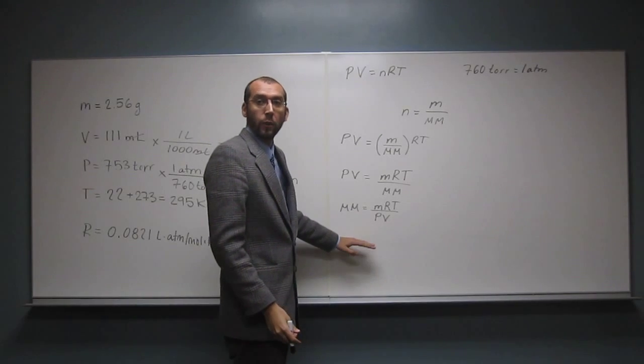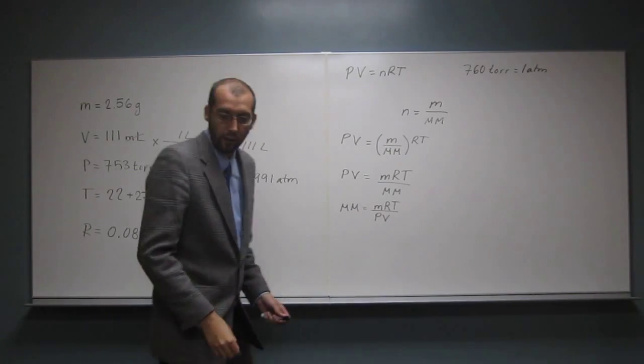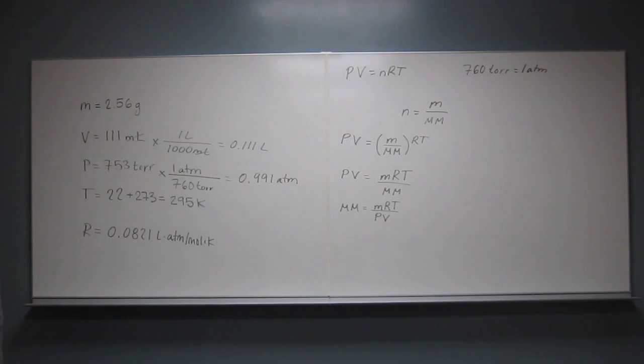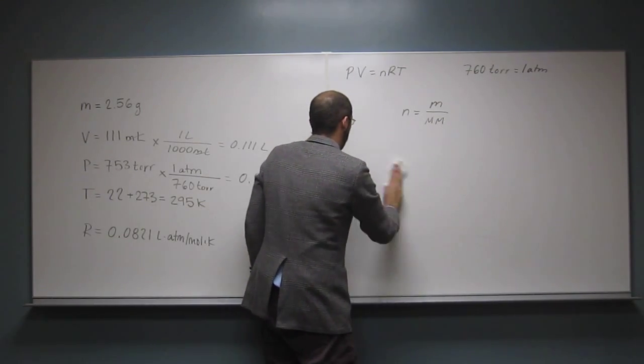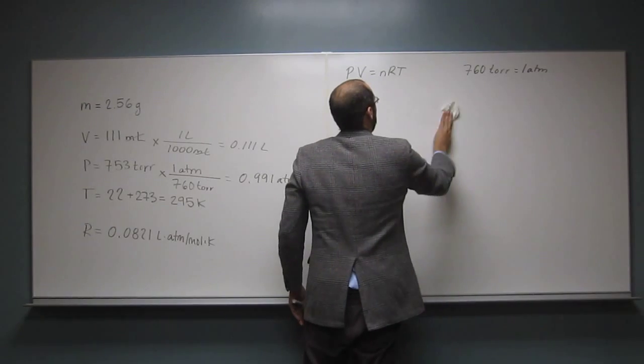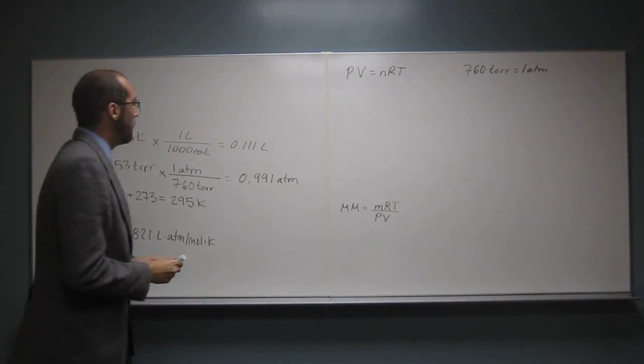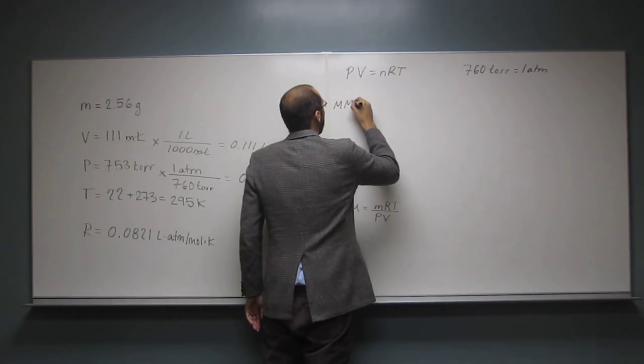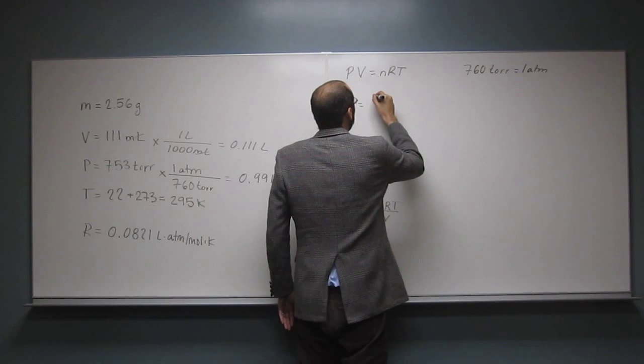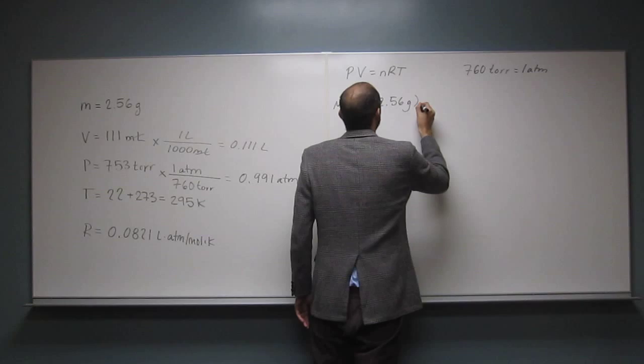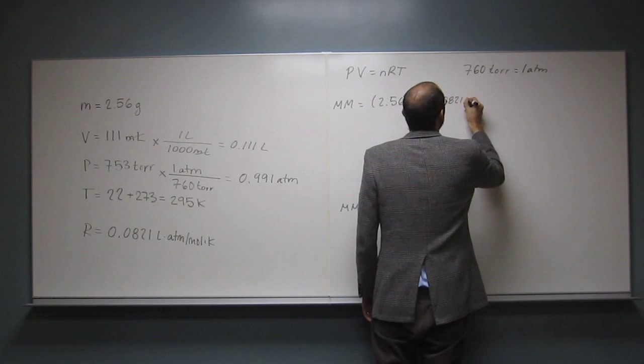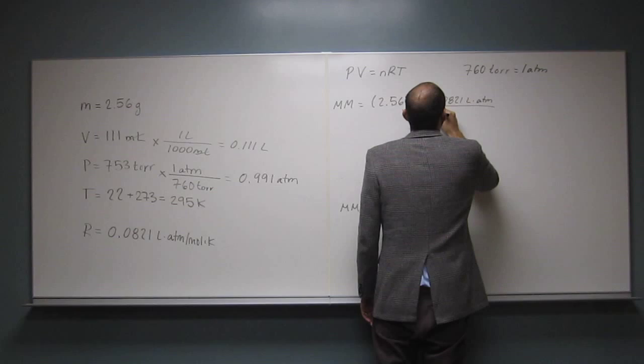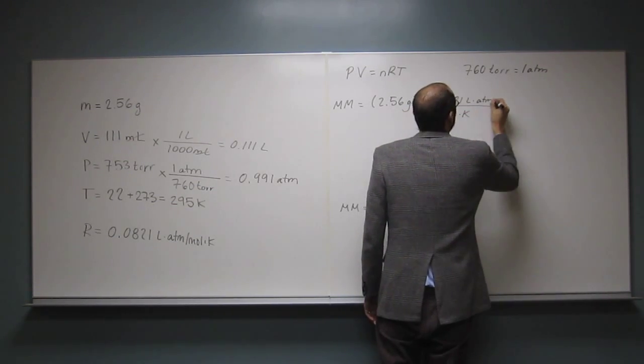So, now it's just a plug-and-chug problem. I'm actually going to erase all of that stuff that we've got there. So, molar mass is going to equal, well, the mass, 2.56 grams, times R, 0.0821 liter atm for 1 mole kelvin, like that, temperature,